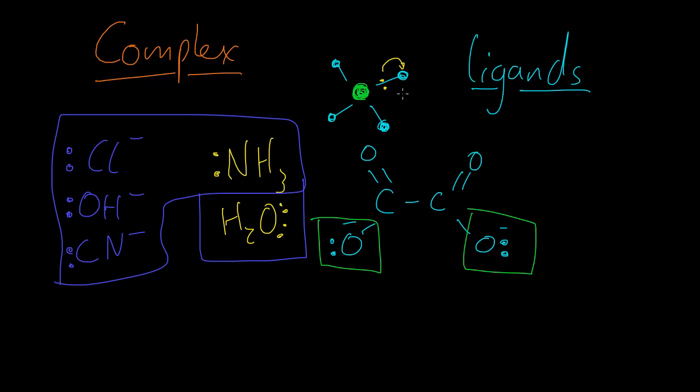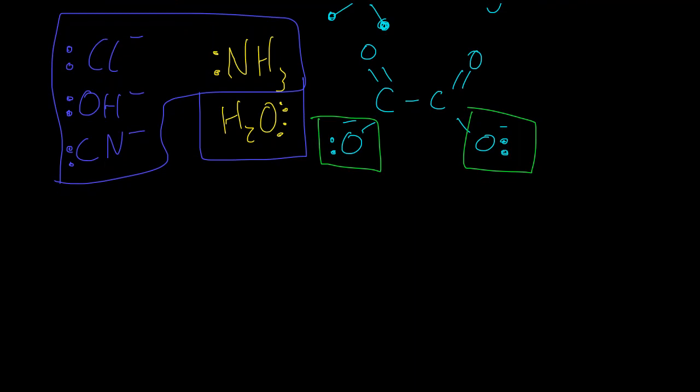So how do we separate these? Well, we have these names for them. Based on how many lone pairs it can donate to one metal ion, we can call it unidentate. And this name comes from, I think it's Greek, which literally means one tooth. And they use tooth as in something that latches on. So this means that it can only form one coordinate bond.